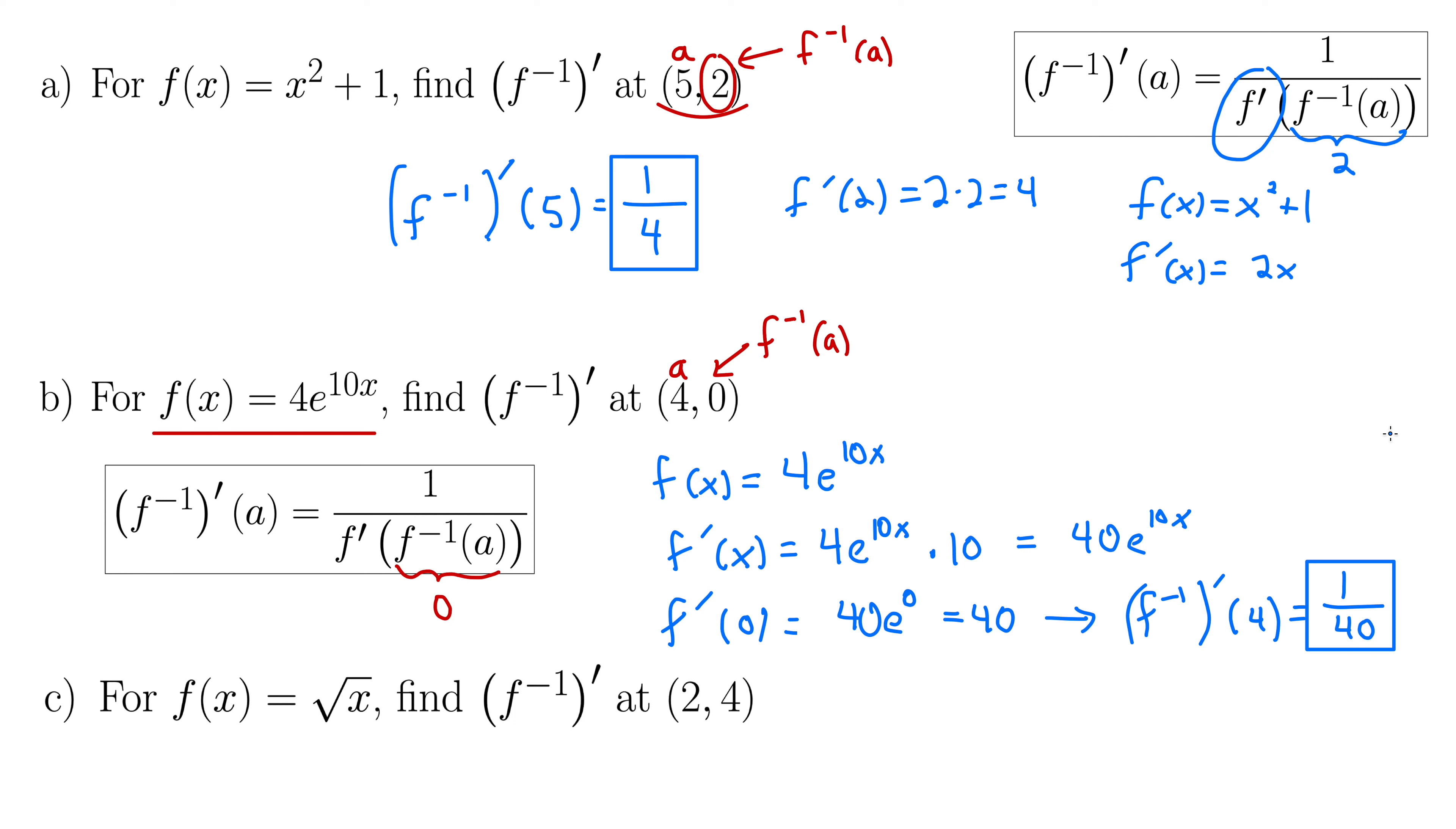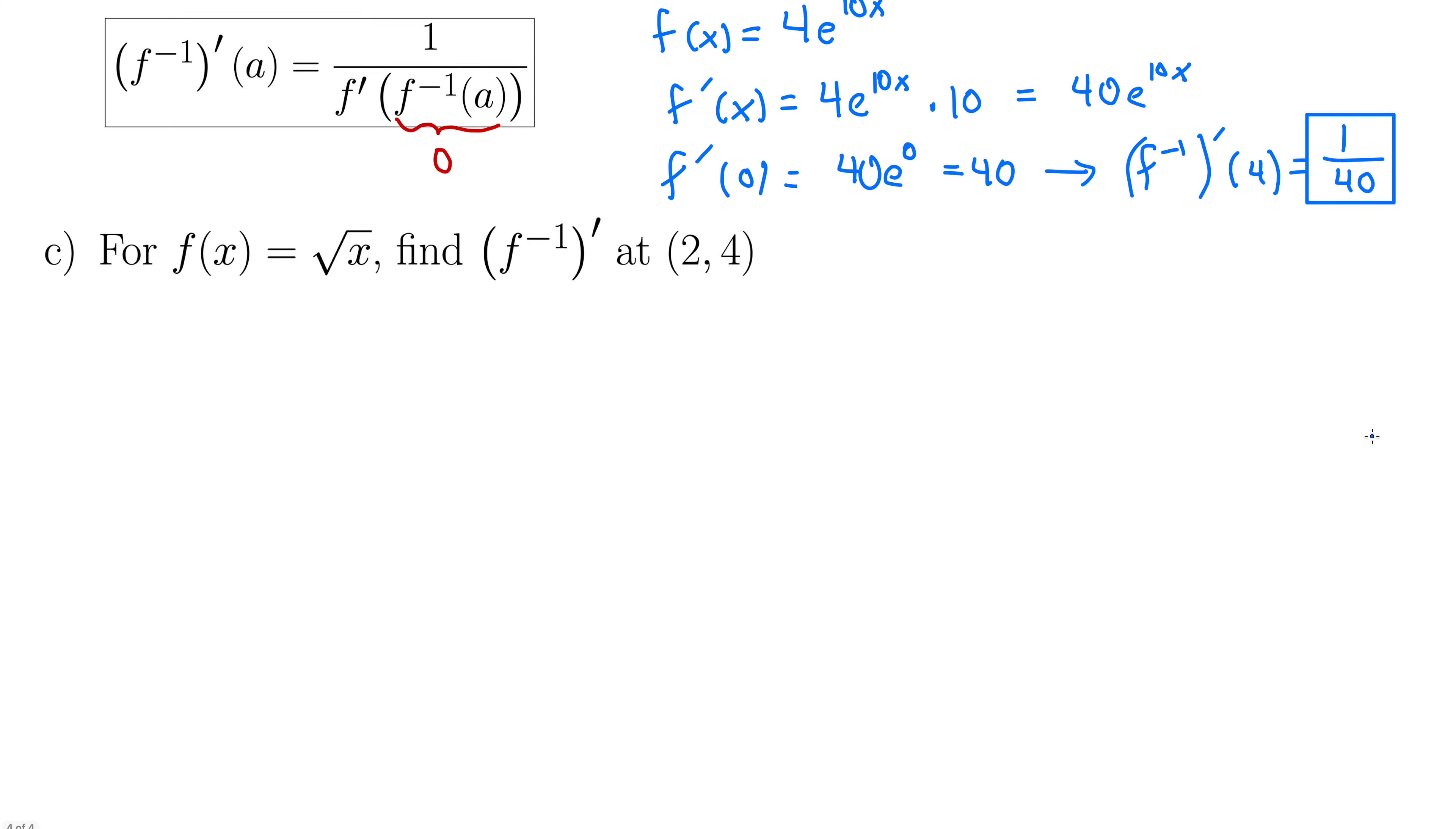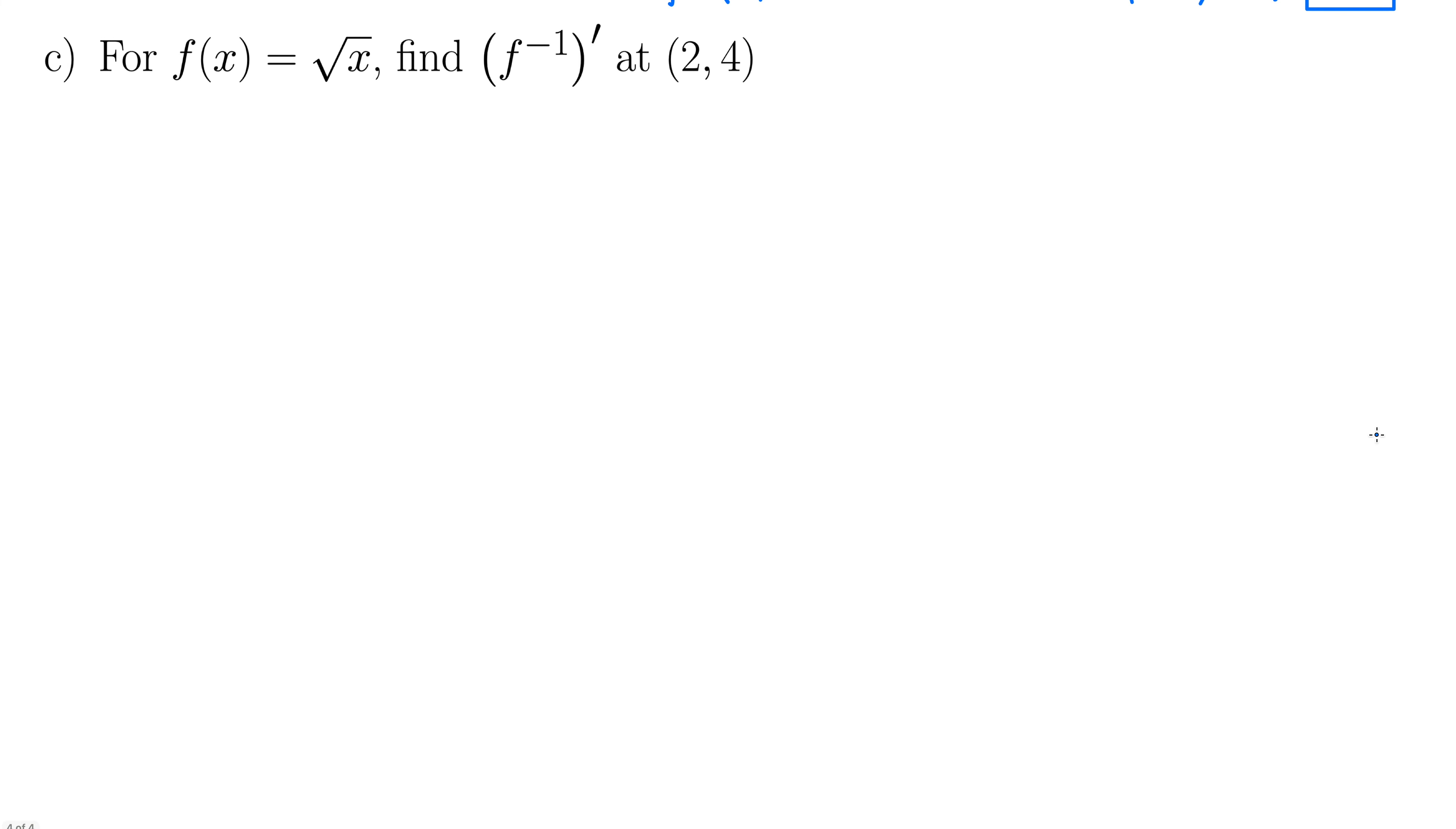Let's look at c. We have, for f(x) equals square root of x, find f⁻¹'(a) at the point (2,4). Well, I've had a lot of fun with this. Why don't you give this one a shot, and then we will work it together and see where things stand. I will bring this theorem in here so you can work right off of that. Pause the video, give it a shot, and then we'll work it together.